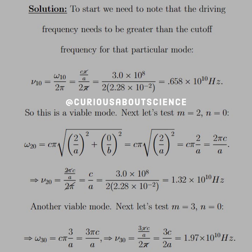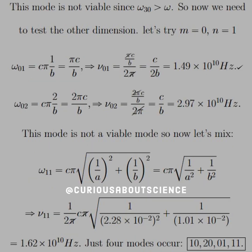Now let's test it for m equals 3 and n equals 0. That equals 3πc over a for omega. Then the π is canceled, so we're left with 3c over 2a, which is 1.97 times 10¹⁰ Hz. Notice that this mode creates a frequency higher than the driving frequency, so we cannot use it.